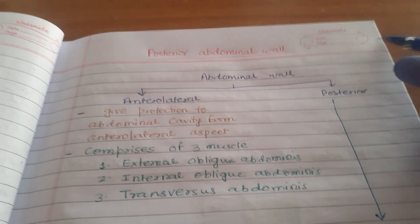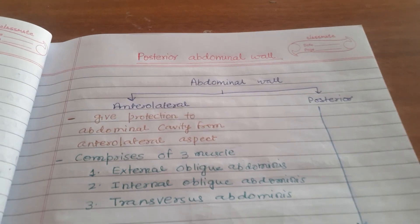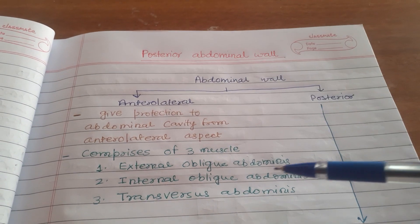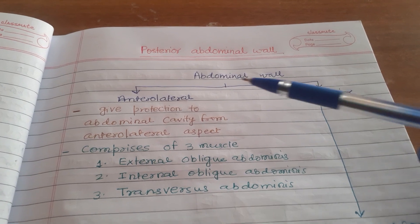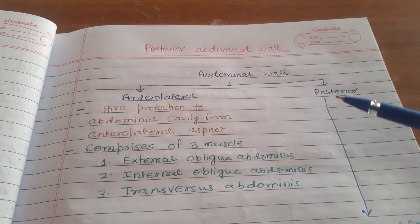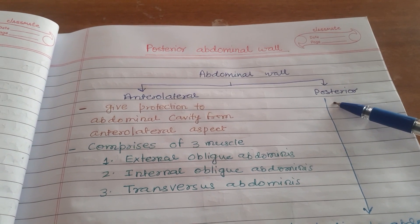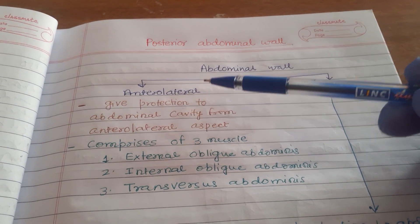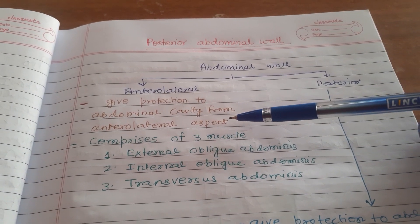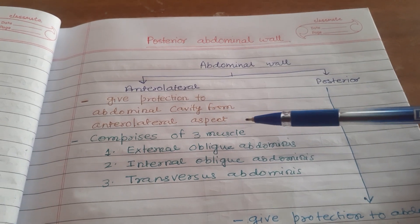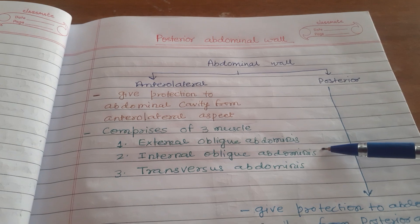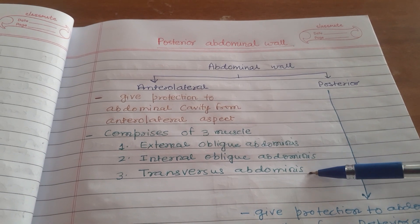Today I am going to teach you posterior abdominal wall. The abdominal wall encircles the abdominal cavity and is divided into two parts: the anterolateral wall and the posterior wall. The anterolateral wall gives protection to the abdominal cavity from the anterolateral aspect and comprises three muscles: external oblique abdominis, internal oblique abdominis, and transversus abdominis.